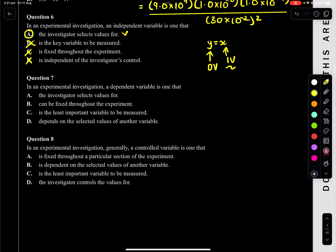Question 7: in an experimental investigation, a dependent variable is one that — an investigator selects values for? No. Can be fixed throughout the experiment? No. Is the least important to be measured? No, it is actually the most important one. Depends on the selected values of another variable? Absolutely — it depends on the x values, it depends on what we put in x and that outputs our y. So D is your answer.